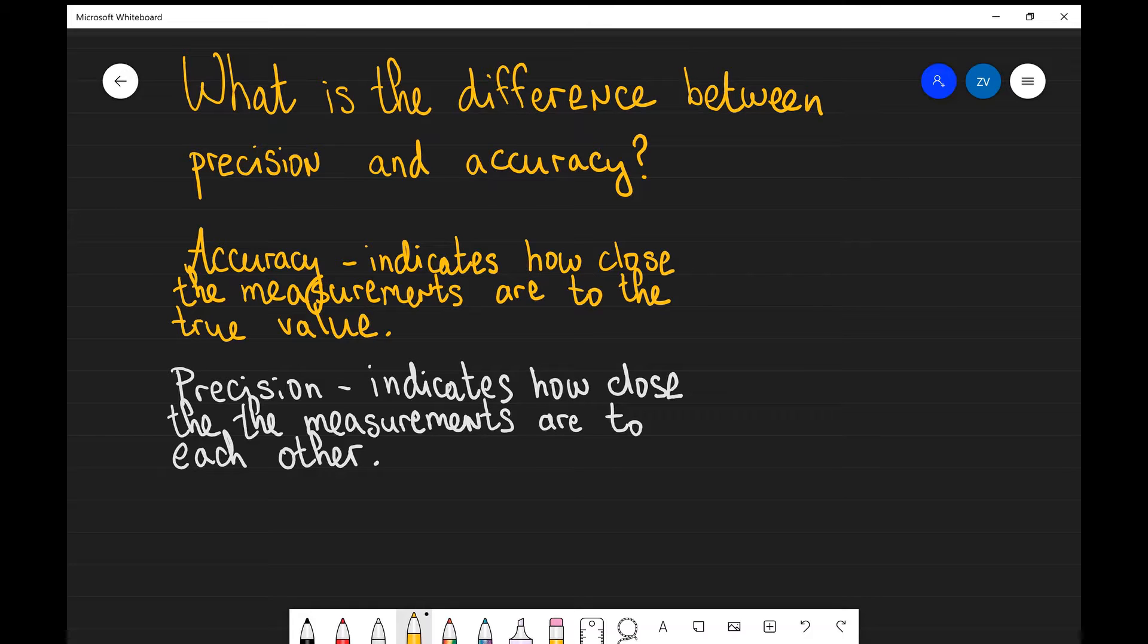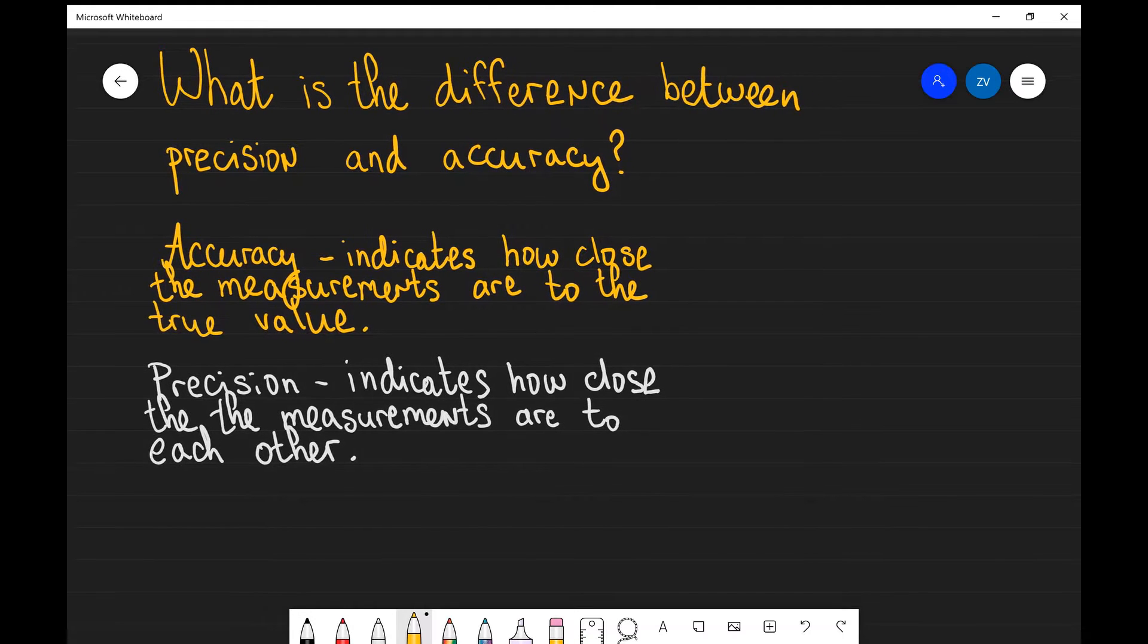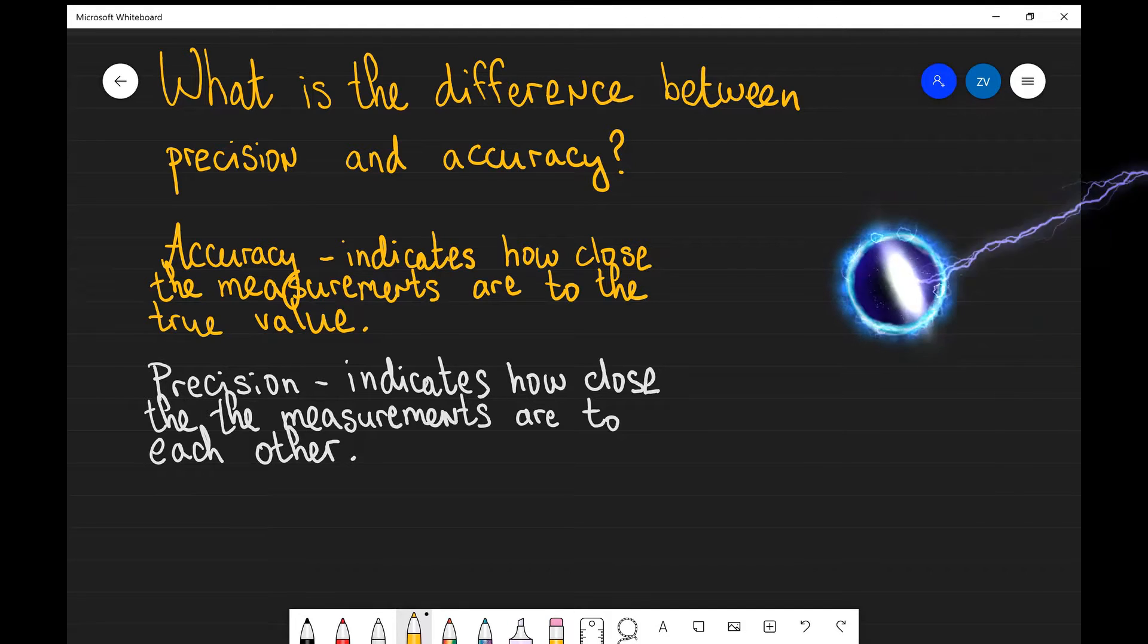We can represent the true value with a black hole in spacetime on my blackboard. If we were to shoot some light bolts into the black hole and we managed to hit the center, this would be an example of high accuracy.